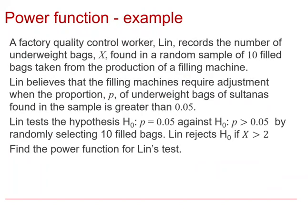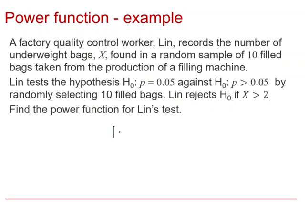This question, and again I suggest you pause and read it through and make notes on it, is looking at finding a power function, so an algebraic expression for power. We just consider the power function as 1 minus the probability of making a Type II error. We are going to be interested in the probability of accepting the null hypothesis when the null hypothesis is false.